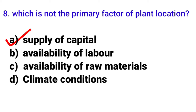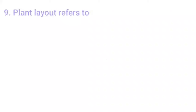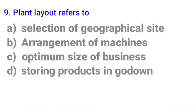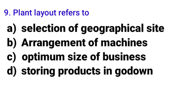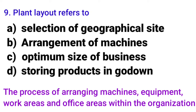The correct answer here is 'supply of capital' — because that is a secondary factor, not a primary one. Next MCQ: 'Plant layout refers to' — option A: selection of geographical site; option B: arrangement of machines; option C: optimum size of business; option D: storing products in godowns. Plant layout means arrangement of machines, so the answer is option B.